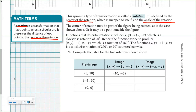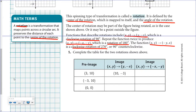They give us a couple of common rotation functions. This notation is a clockwise rotation of 90 degrees. For a 180-degree rotation, you use this notation. Then there's a notation for a clockwise rotation of 270 degrees, which is the same as counterclockwise 90 degrees. Those are ones you'll be using a lot.